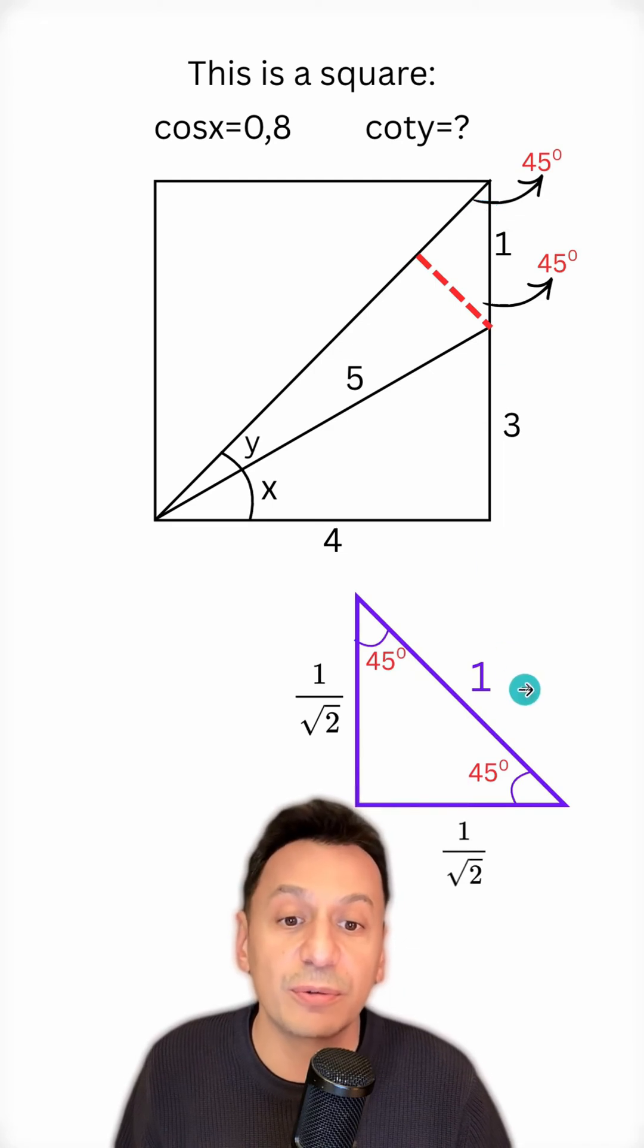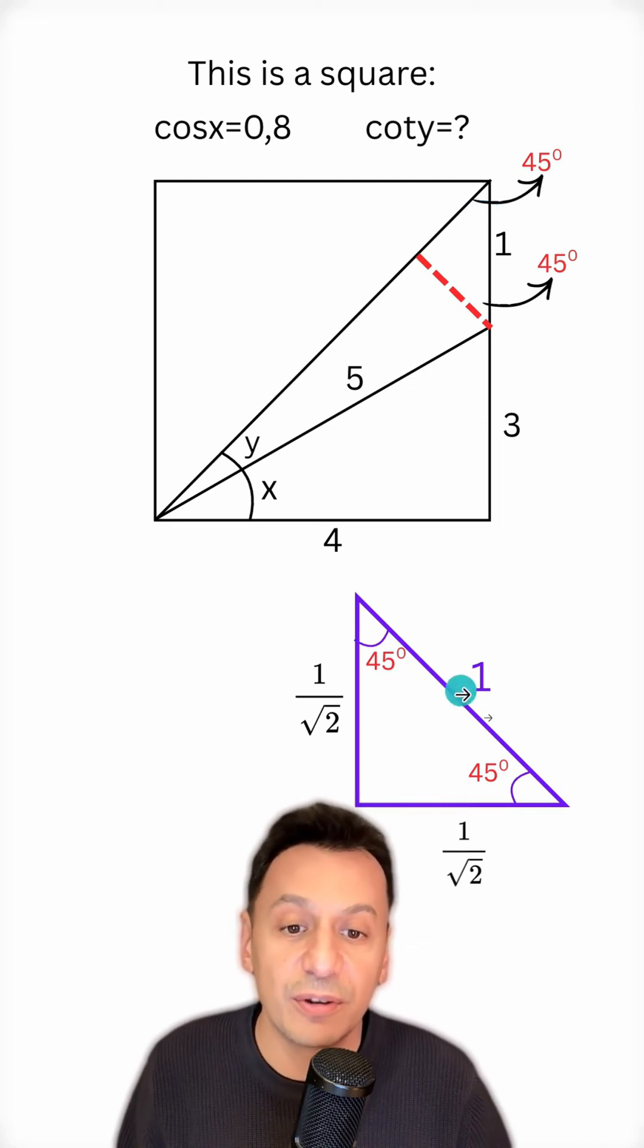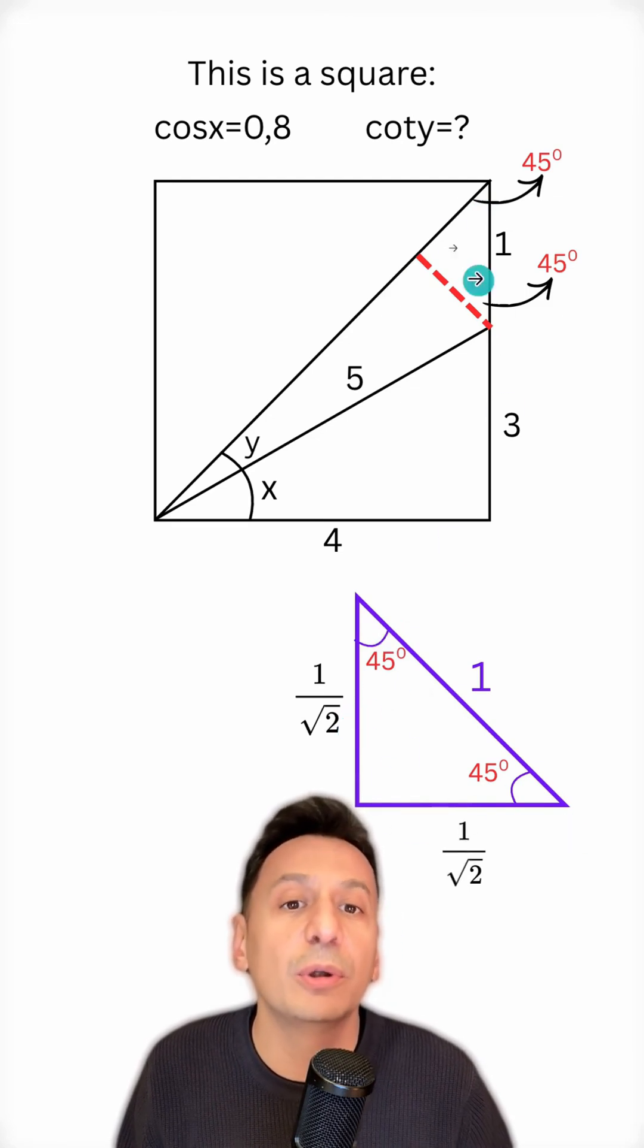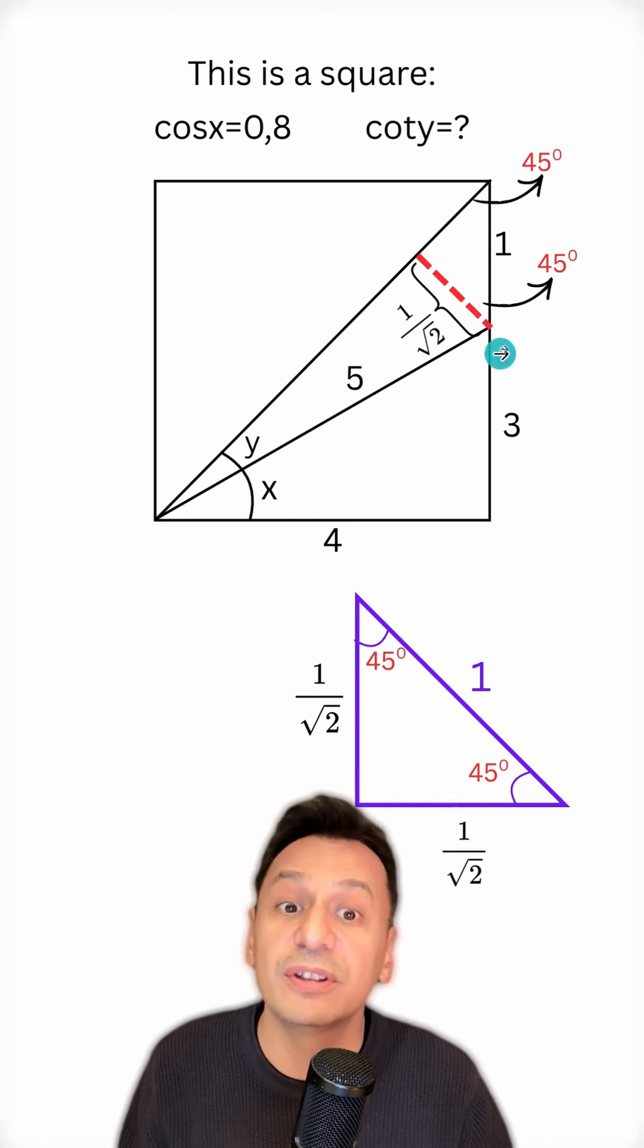Now I remember the information from the beginning of the video. That is, in a right isosceles triangle, the hypotenuse is root 2 times the length of the legs that intersect at a right angle. So, I can write 1 over root 2 for the sides here.